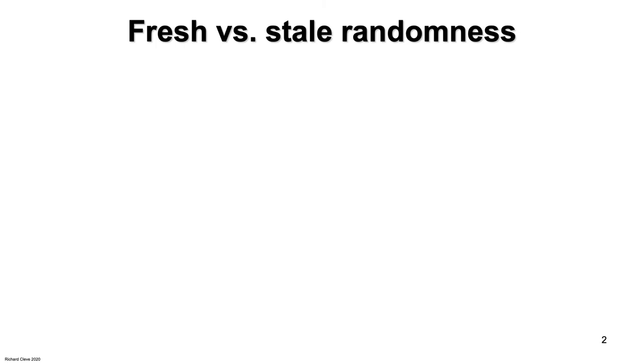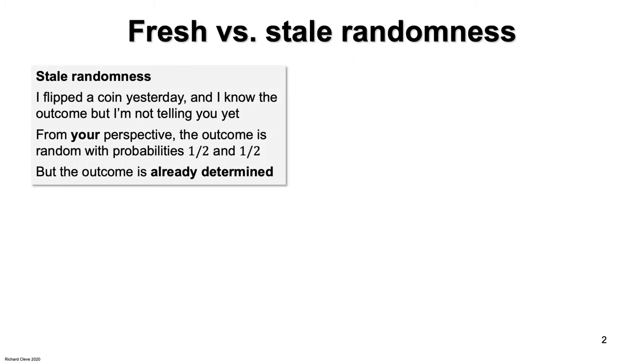I'd like to begin by making a distinction between fresh randomness and stale randomness. By stale randomness, I mean something like this. Suppose that I flipped a coin yesterday and I know what the outcome was, but I'm not telling you what the outcome was.